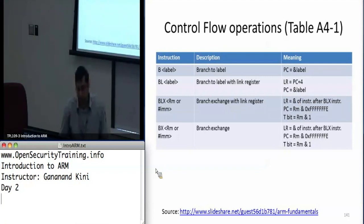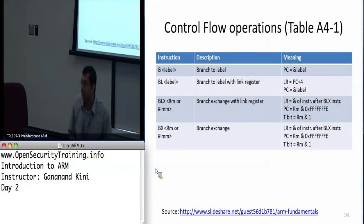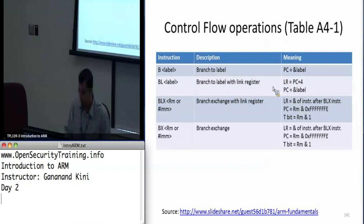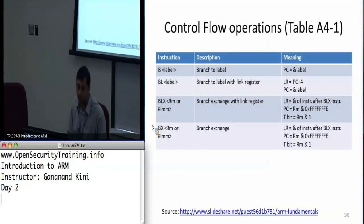For BLX with a destination register or an immediate offset value, the link register gets updated with the address of the instruction right after the current BLX instruction — so it's not a plus-four offset in this case. This is sort of what Dave was seeing yesterday with the libc init. So there is a difference between BL and BLX — that's what I wanted to highlight here.